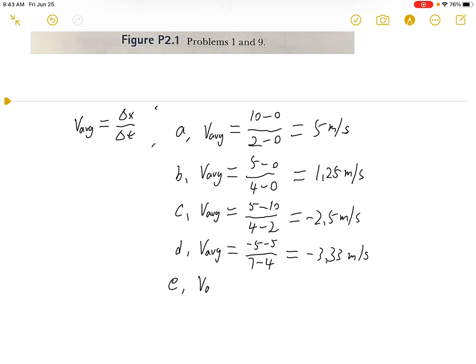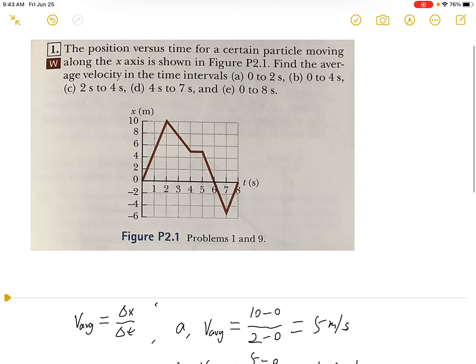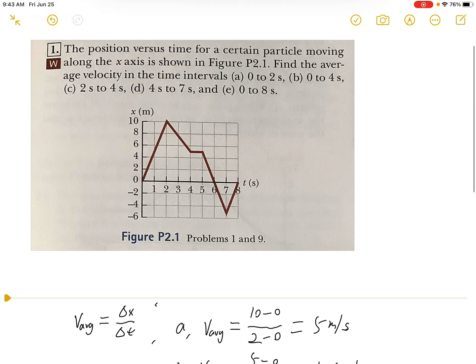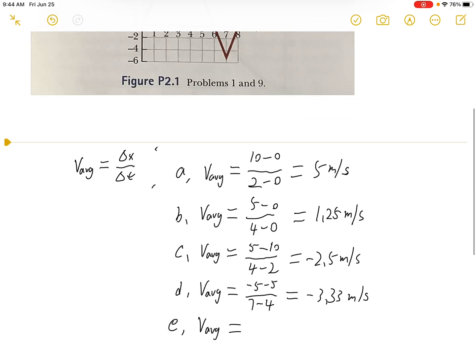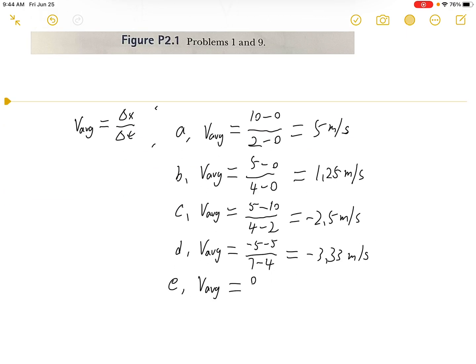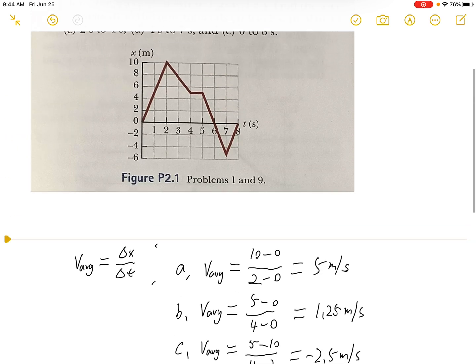For part e, from 0 to 8 seconds, the average velocity equals 0 minus 0 over 8 minus 0. So we get 0 meters per second. That's the average velocity from 0 to 8 seconds.